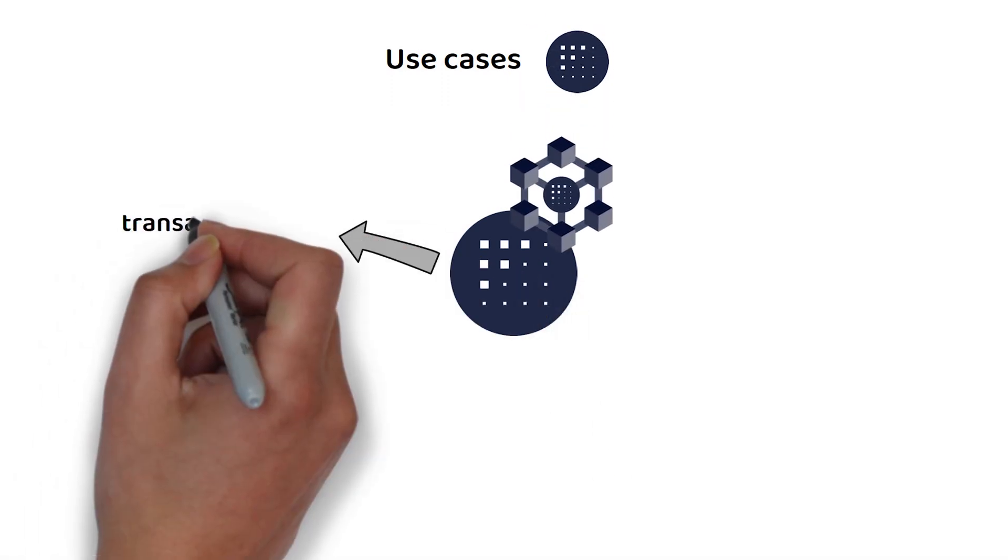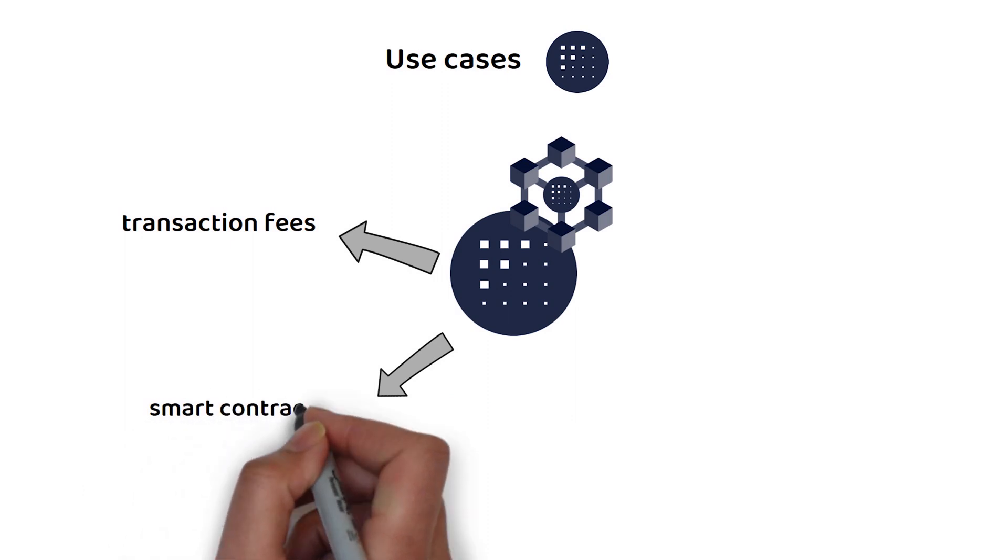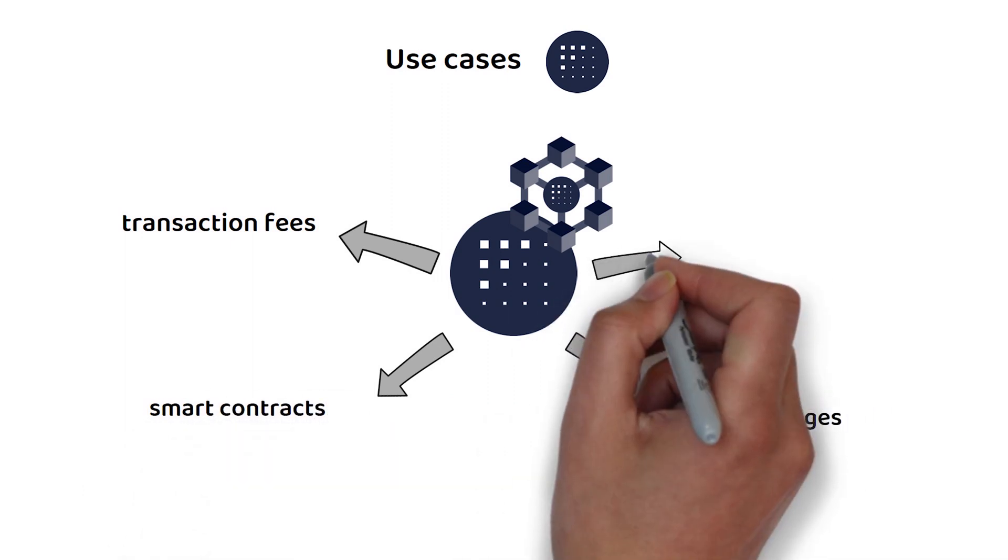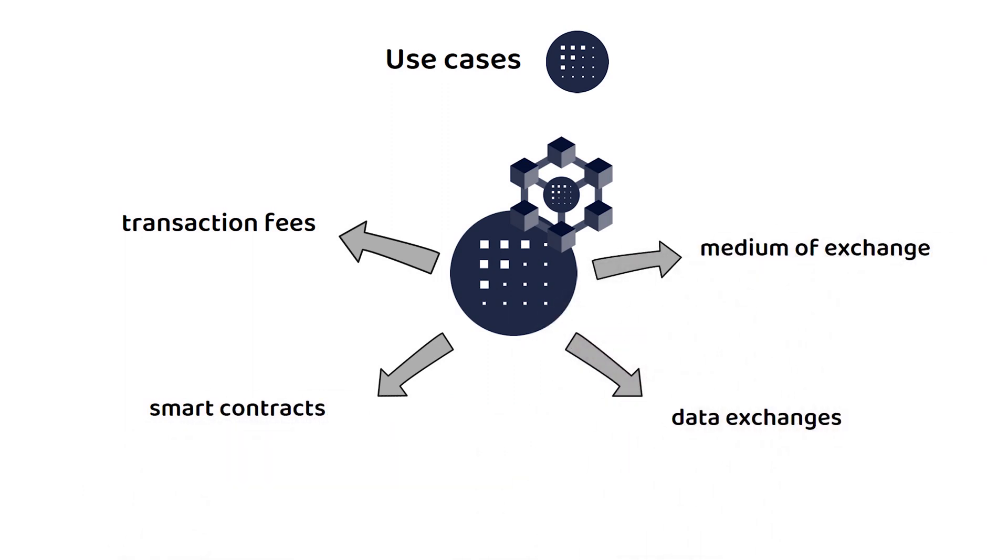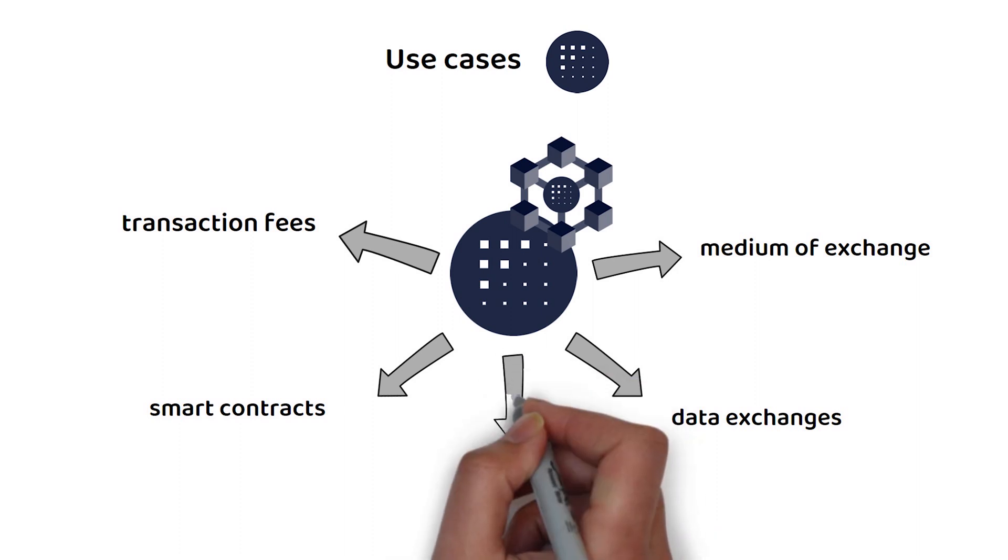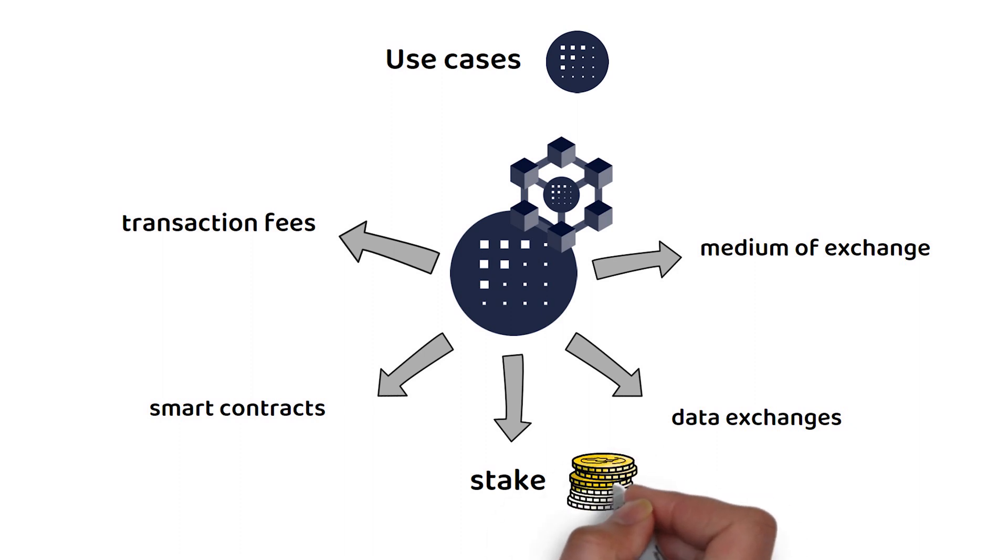FET is a primary medium of exchange for the Fetch AI ecosystem, and it is used to pay for transaction fees, smart contracts, data exchanges, and as a medium of exchange. As with other Cosmos SDK-based blockchains, these FET tokens can be staked to the network to earn a reward proportional to how much you have staked.